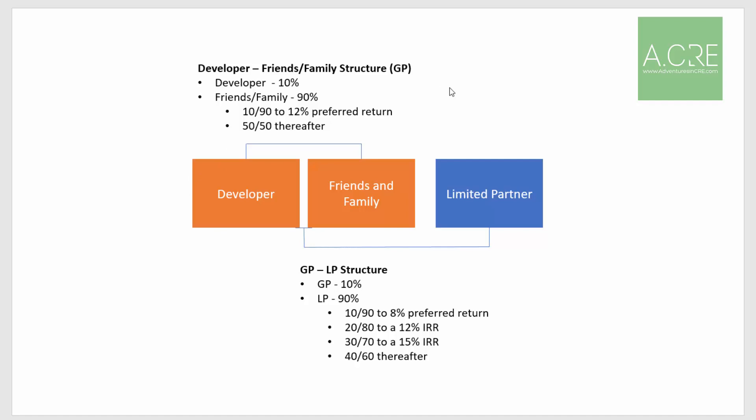Here is a hypothetical structure, one that's not uncommon in an industry where you have a developer who at the early stages of the development — sourcing land, acquiring the entitlements, working through the drawings — seeks out friends and family or other co-GP capital to help get the project to a point where the developer can then raise larger capital from a limited partner, often an institution.